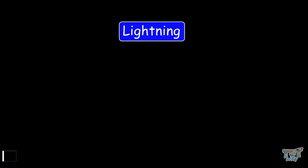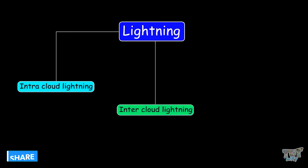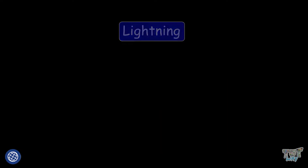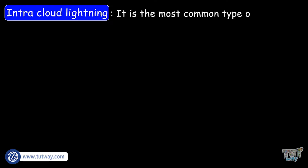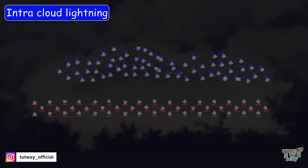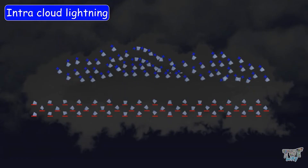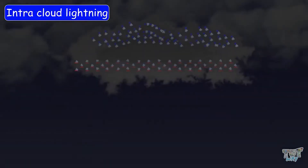Lightning can be of three types: intra-cloud lightning, inter-cloud lightning, and cloud-to-ground lightning. Intra-cloud lightning is the most common type of lightning. This lightning occurs within a cloud, where the two types of charges attract within the cloud, and this type of lightning is visible from even miles away.